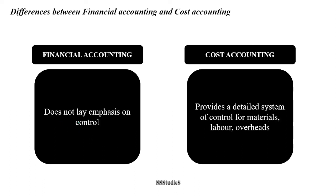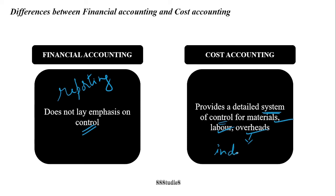Financial accounting does not lay emphasis on control because the main focus of financial accounting is just to report — reporting to the stakeholders as to how the year has been in terms of business operations, whether it was profitable or there were losses. Cost accounting, on the other hand, provides a detailed system of control for materials, labor, and overheads — where overheads are indirect expenses. The focus of cost accounting is to provide a control mechanism for materials, labor, and indirect expenses.